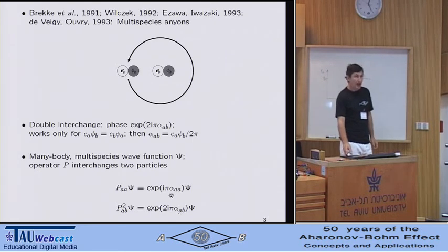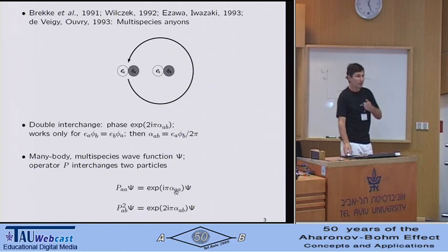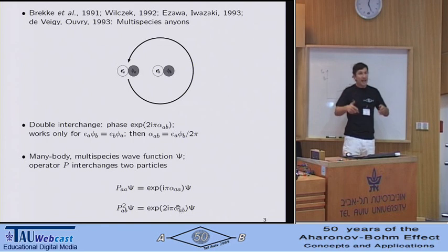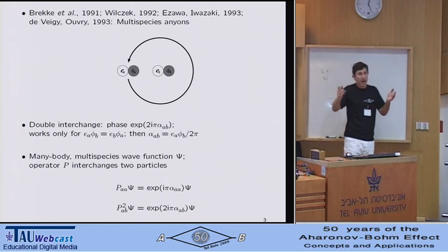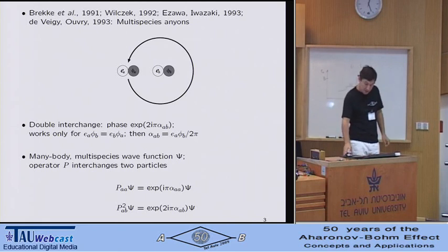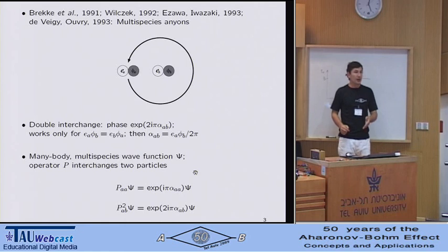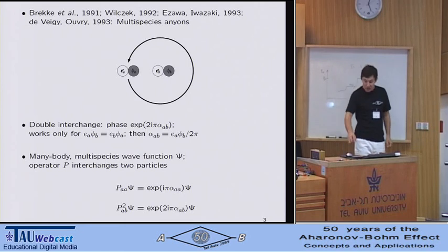Note that while alpha_AA equals zero corresponds to bosons, alpha equals one to fermions. In this case, for the cross-species statistics parameter, an integer is as good as zero because of periodicity. So for example, alpha equals one means no statistical coupling at all.